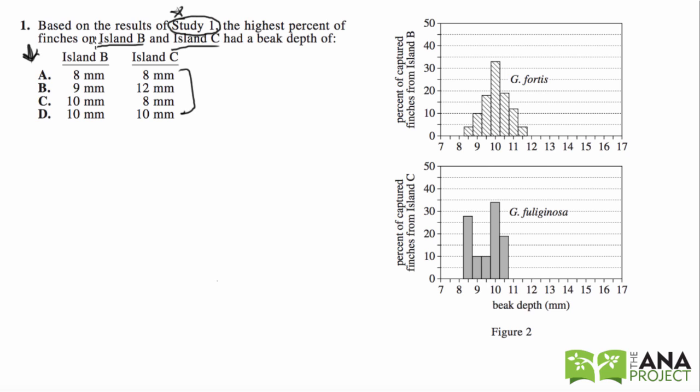We have study one, island B, and island C. So this should give us enough clues in terms of where we're going to look. So if you look at your first page, we see study one, and then we see figure two. And figure two actually has three graphs, one for island A, one for island B, and one for island C. So I actually pasted the graphs of island B and island C. We don't need island A. We just need island B and C. And then we have all of these beak sizes or beak depths or whatever.